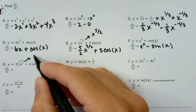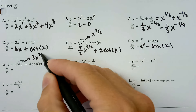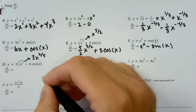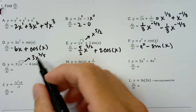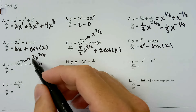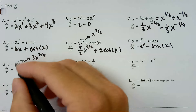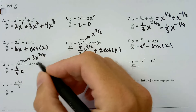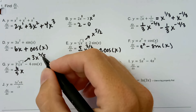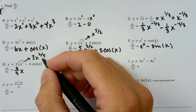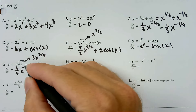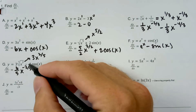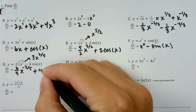This is going to be 3x to the 2/5 — it's the fifth root, so it'll be the one-fifth power minus 4 cosine x. I'm going to multiply 2/5 by 3 and get 6/5. Then we're going to subtract 1 from the power: 2/5 minus 1 is 2/5 minus 5/5, which is negative 3/5. And then the derivative of cosine is negative sine, so negative 4 times negative sine x is going to be positive 4 sine x.